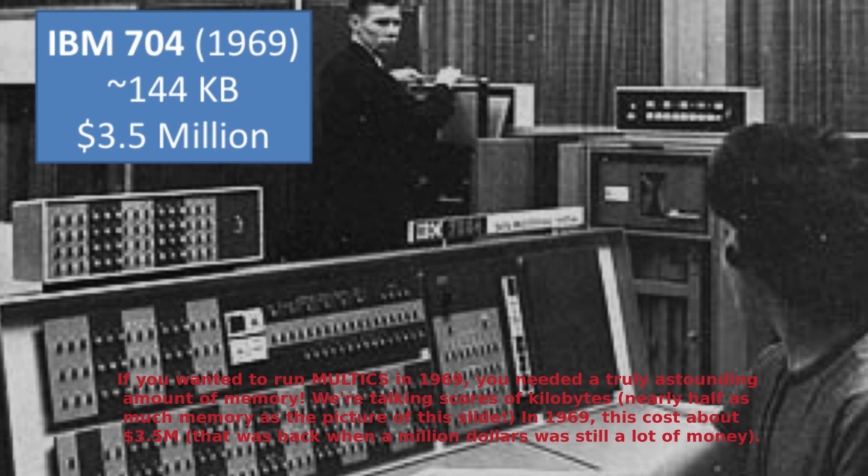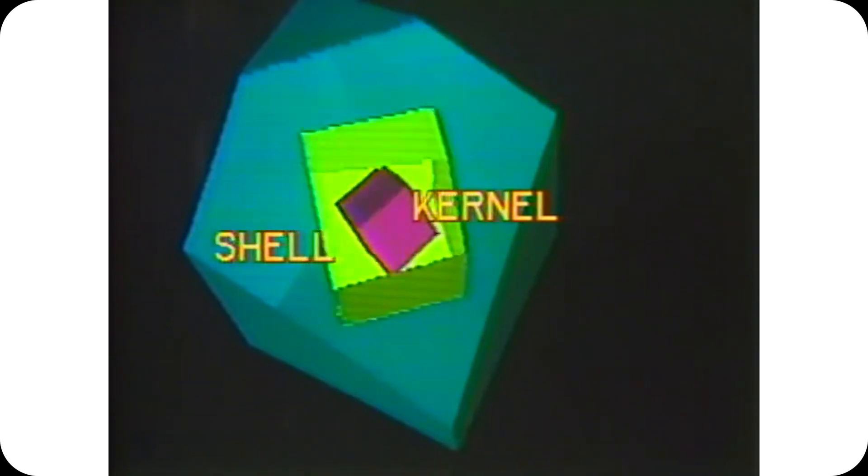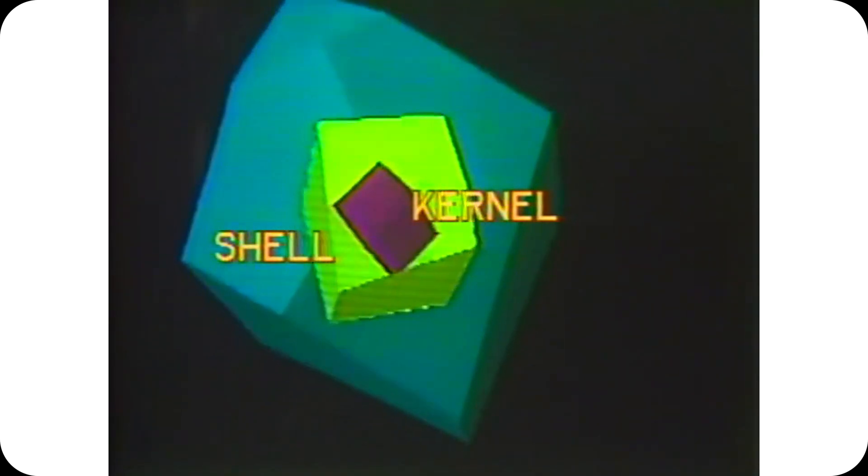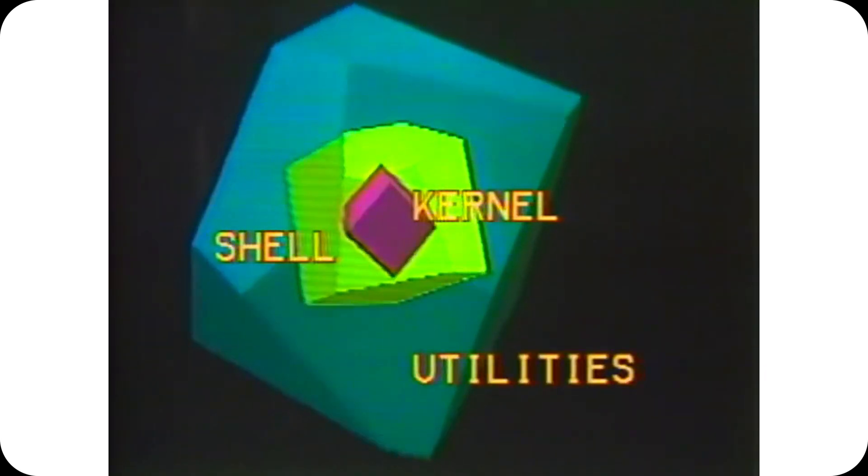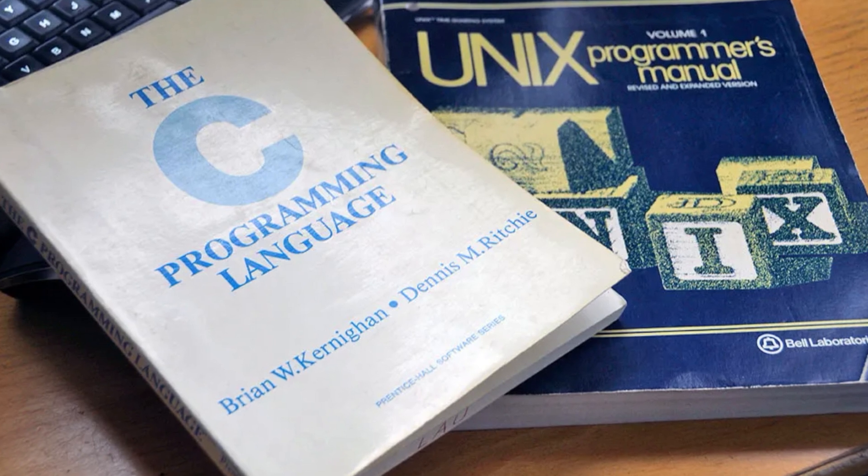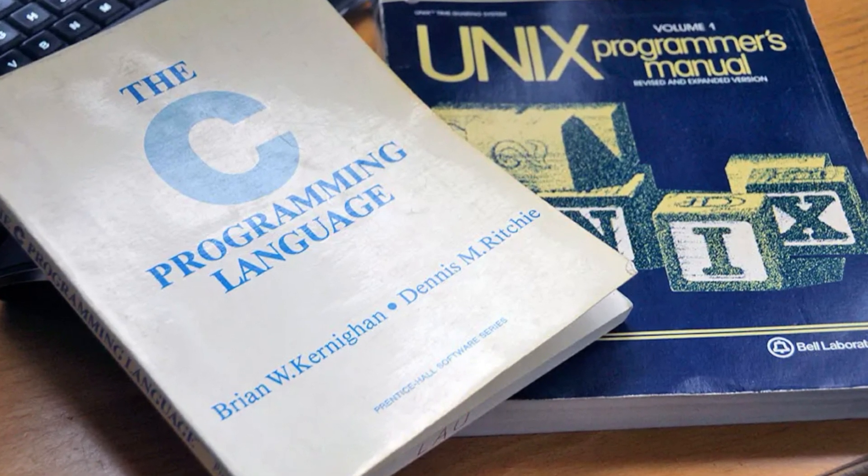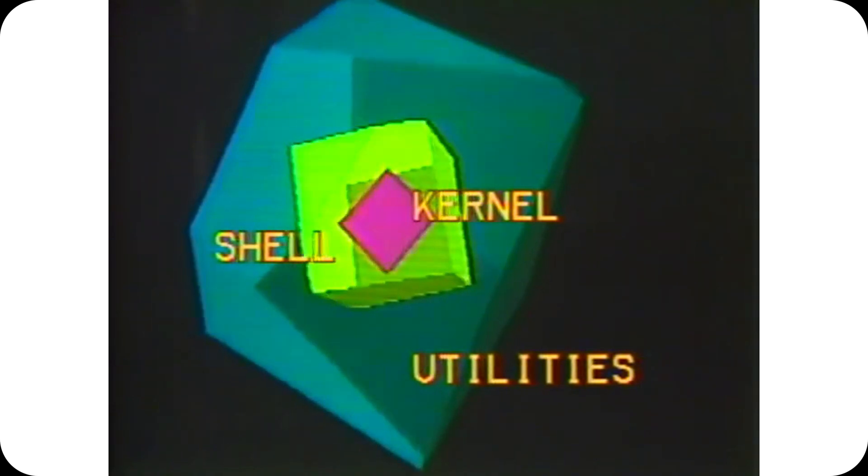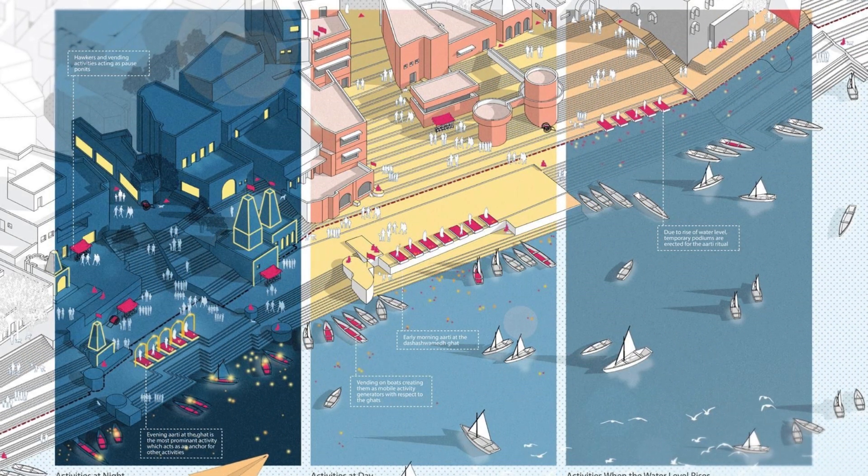Unix was designed as a lightweight and efficient solution for managing timesharing between multiple users. The early versions were written in assembly language, but the turning point came when Dennis Ritchie developed the C programming language. In 1973, Unix was rewritten in C, making it one of the first portable operating systems. For the first time, an OS could be adapted to different machines without having to be rewritten from scratch, paving the way for widespread adoption.